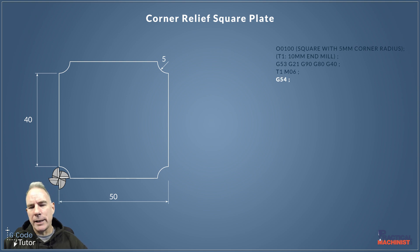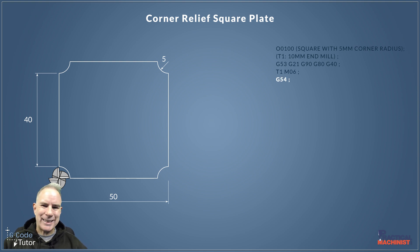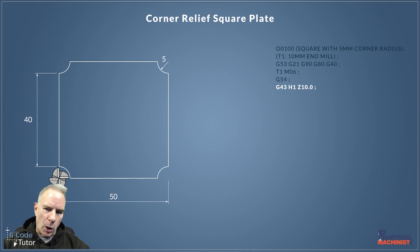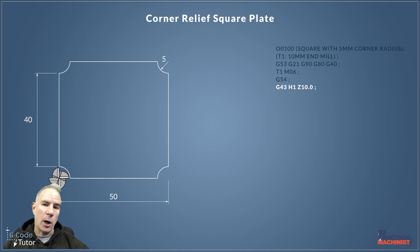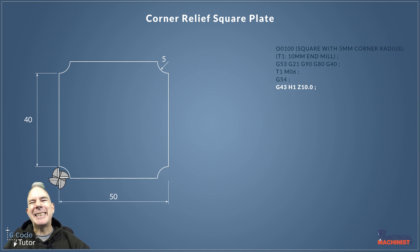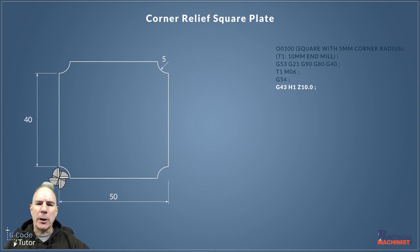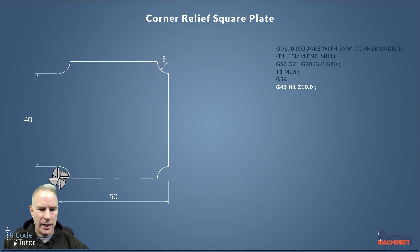Here we're calling our workshift datum G54, which sets the zero point of our part. And this is one of those offsets I was telling you about — when we use T1 instead of T0101 we still need to set the Z height. We define that using an H1 tag, and G43 is our Cutter Length Compensation G-code.